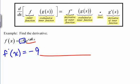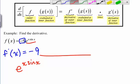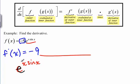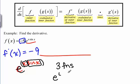What about the e to the x sine of x? How do we find the derivative of that? We need to break it down into its pieces where we know how to find the derivative of each piece. How many basic building block functions do we have here? We have e to the something, we have x, and we have sine x — so we should have three functions that we know how to take the derivative of: e to the something, x, and sine x.